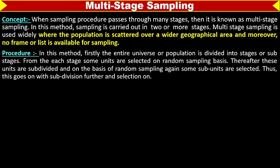The procedure in this method is as follows. Firstly, the entire universe or population is divided into stages or sub-stages. Then from each stage, some units are selected on a random sampling basis. Thereafter, these units are subdivided on the basis of random sampling again. Thus, this goes on with further subdivision and selection.